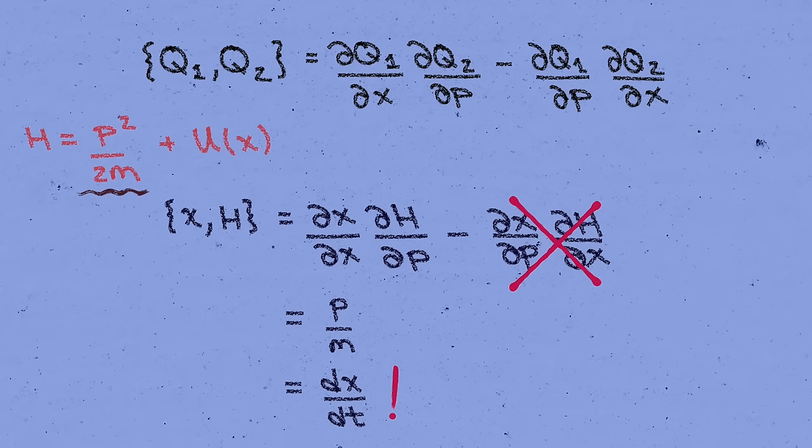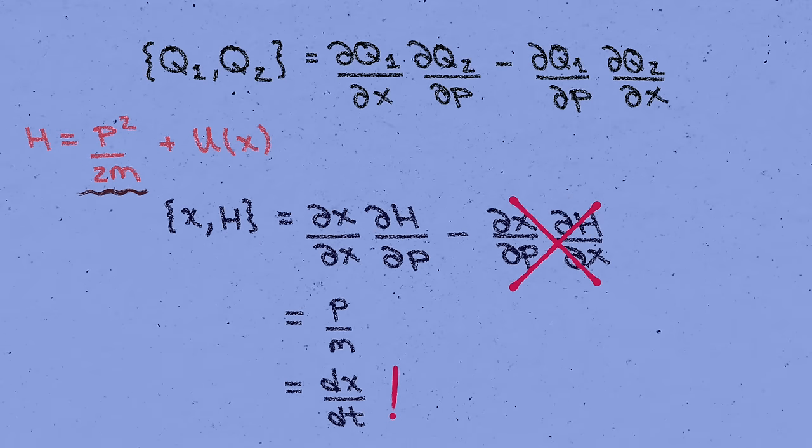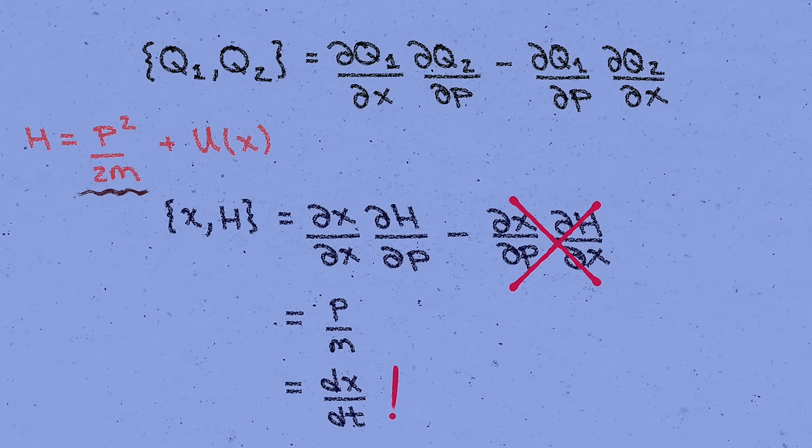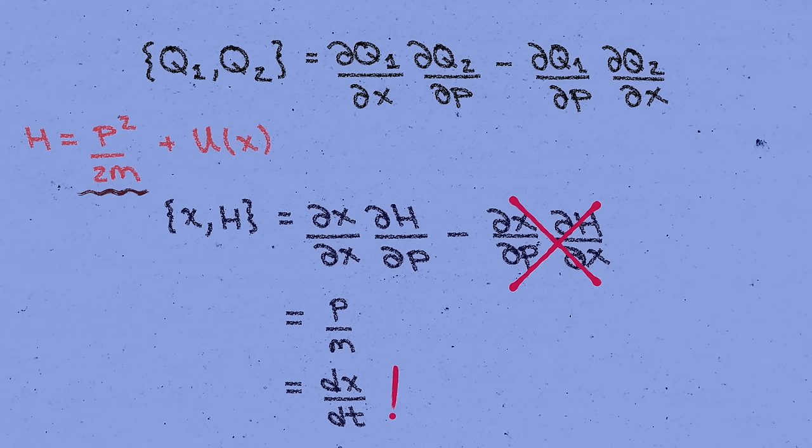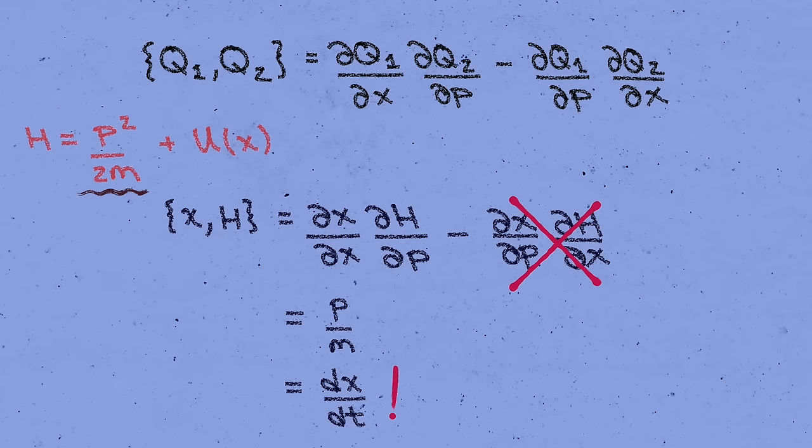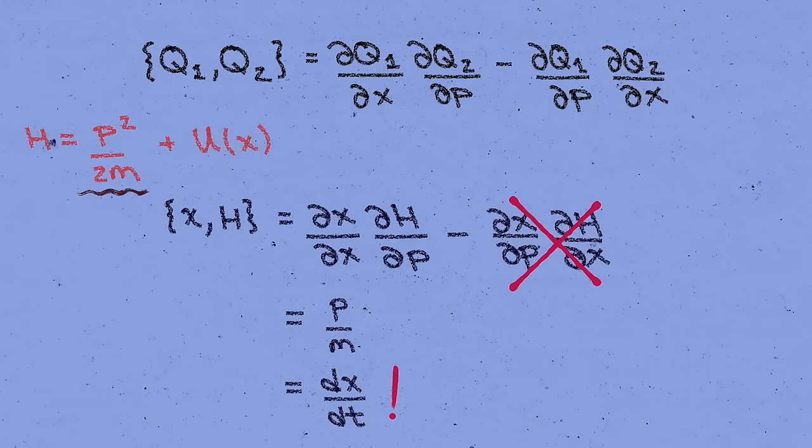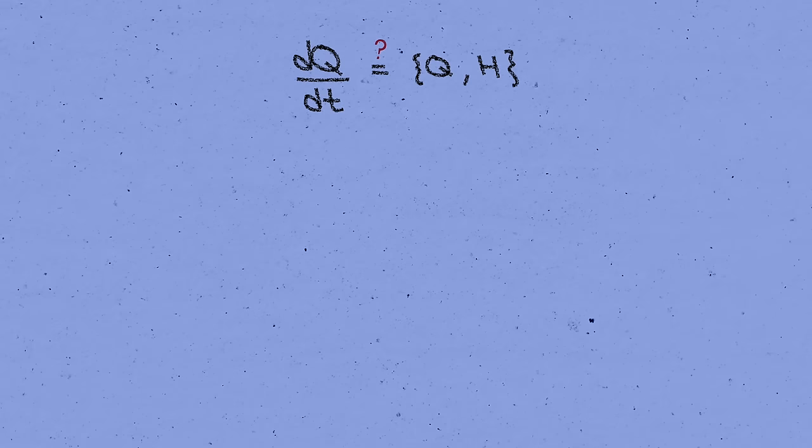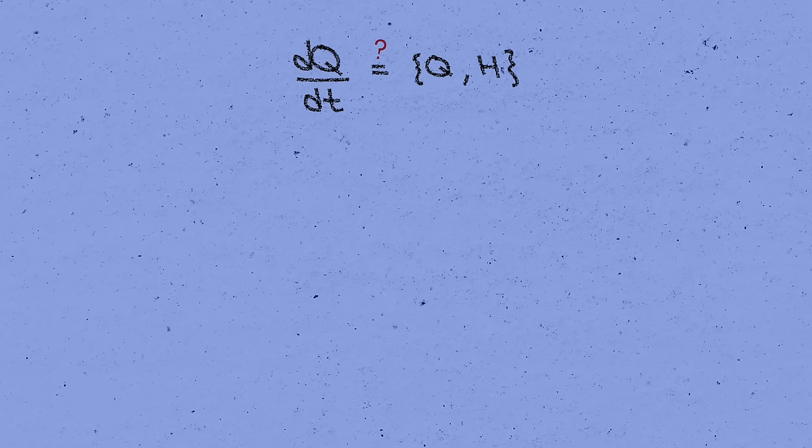By the way, if you find yourself a little tangled up by all these derivatives, I strongly encourage you to work through all these equations for yourself with pencil and paper. To help, you can get the notes that I wrote up for this video for free at the link in the description. But okay, this isn't looking like a coincidence anymore. Is there a general relation here that the rate of change of any function q on phase space is given by its Poisson bracket with the Hamiltonian? Well, let's check.